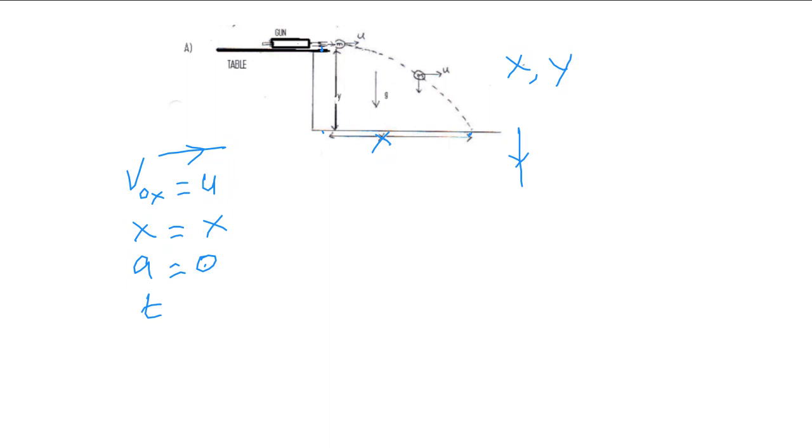We don't have that here but we will get that from the Y motion and then we can use it. Let's say the time is T. Then if you apply one of those kinematic equations, X equals V naught X times T plus one half a X T squared.